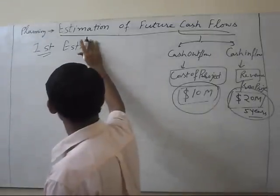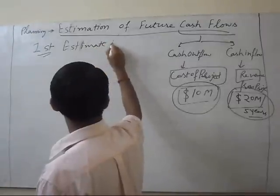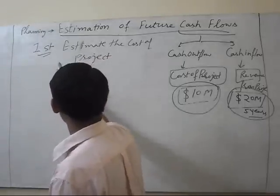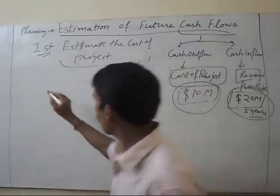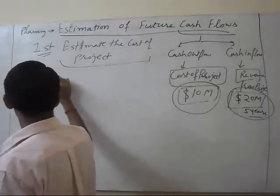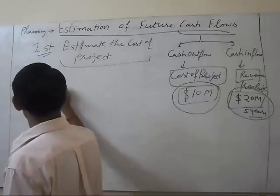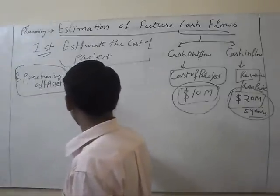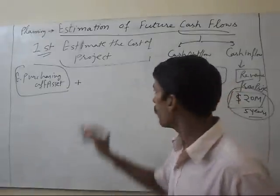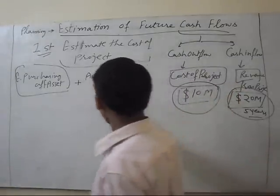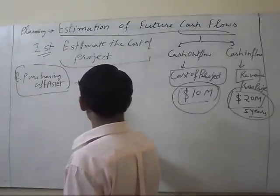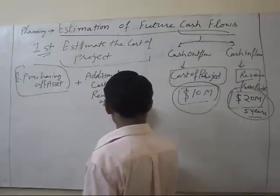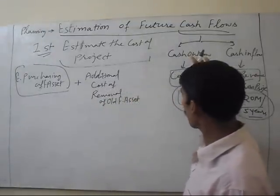First step: estimate the cost of project. What costs will we include? Purchasing of a fixed asset and its estimation, plus additional cost, cost of removal of the old machine or old fixed asset — this will also be part of the cost of the project.